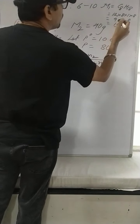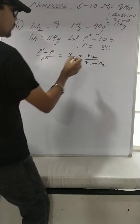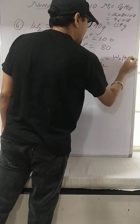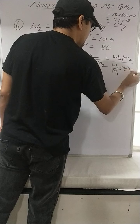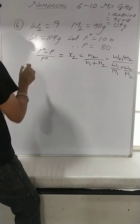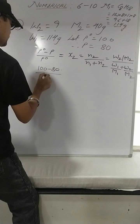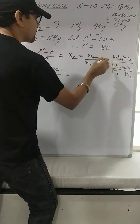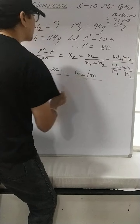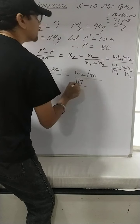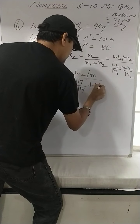Note: it is H18, not H8 — my mistake. Now if you break down this, you will get W2/M2 divided by (W1/M1 + W2/M2). So you will get (100 − 80)/100 = [W2/M2] / [W1/M1 + W2/M2]. Substituting: 20/100 = (W2/40) / (104/114 + W2/40) — wait, W1 = 104 and M1 = 114.